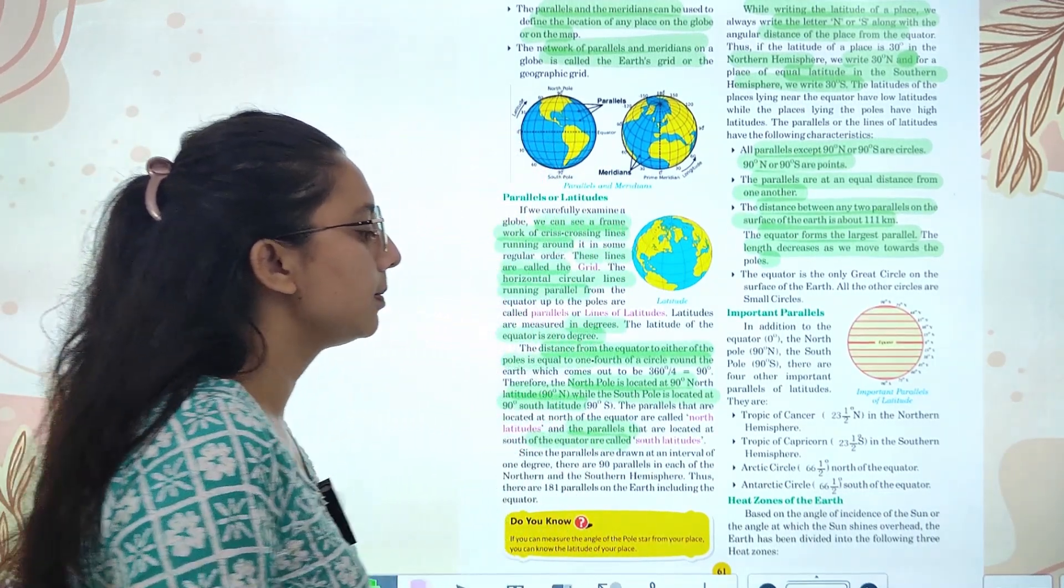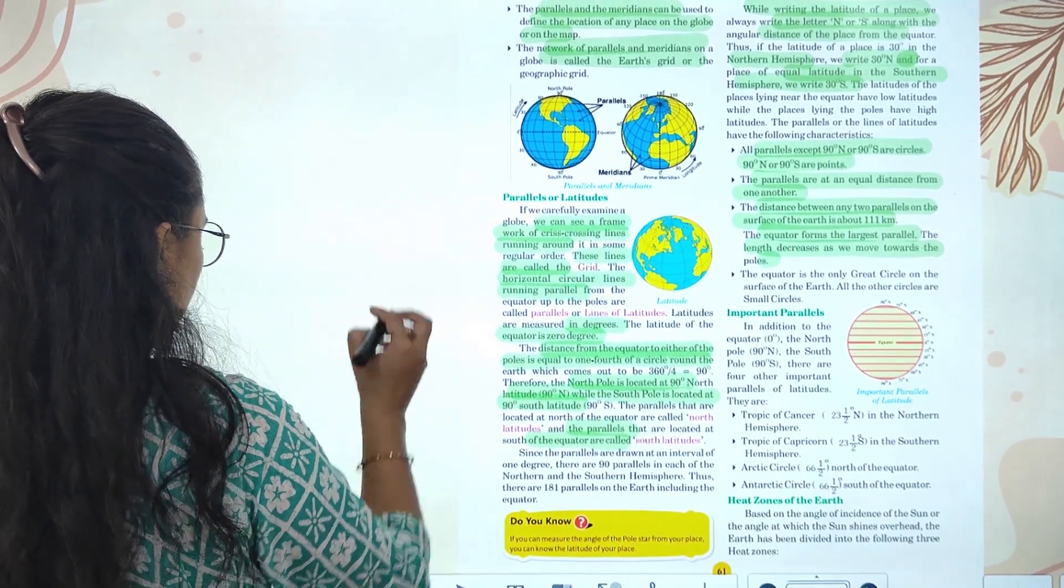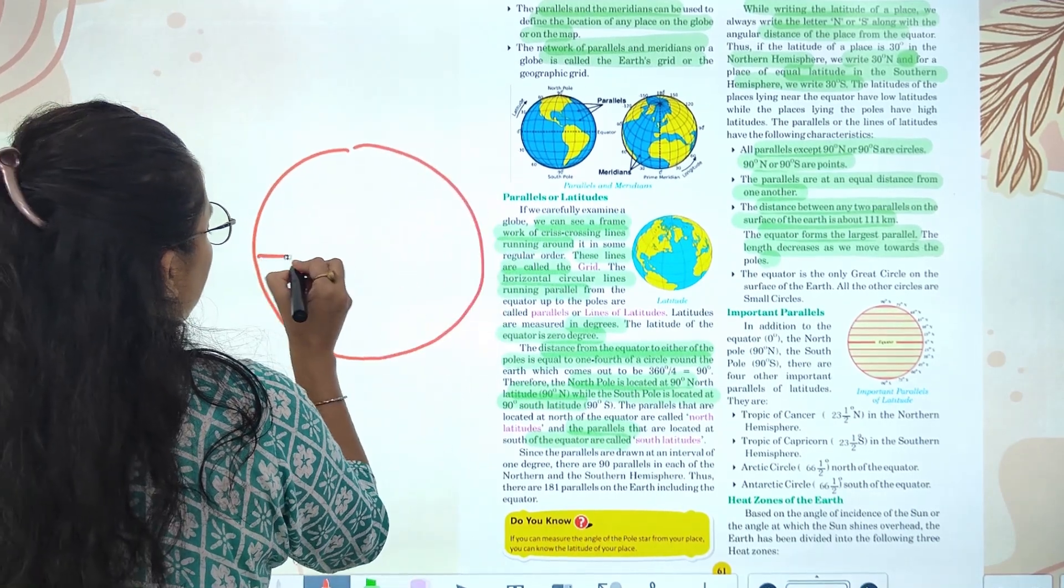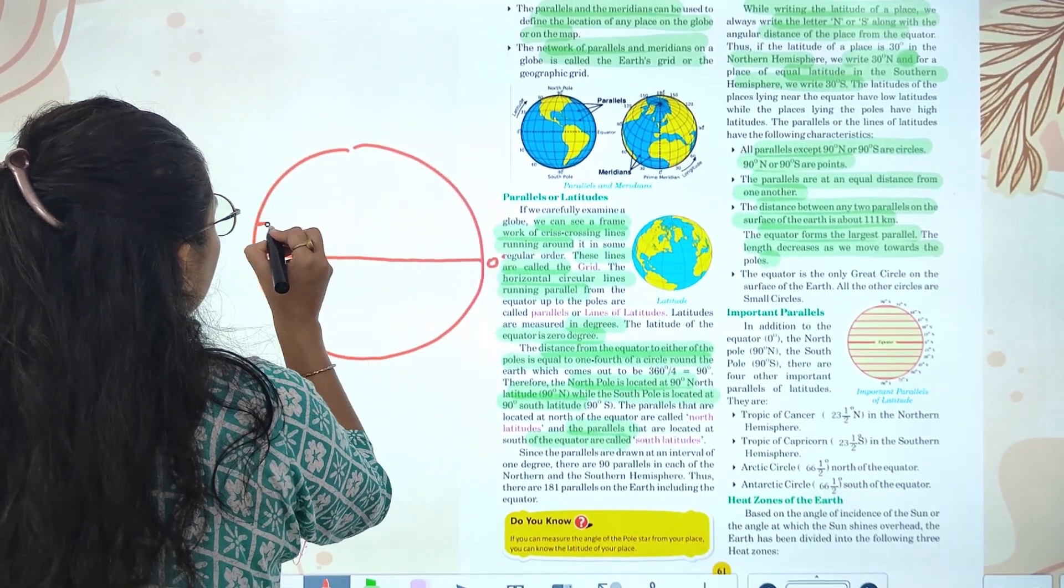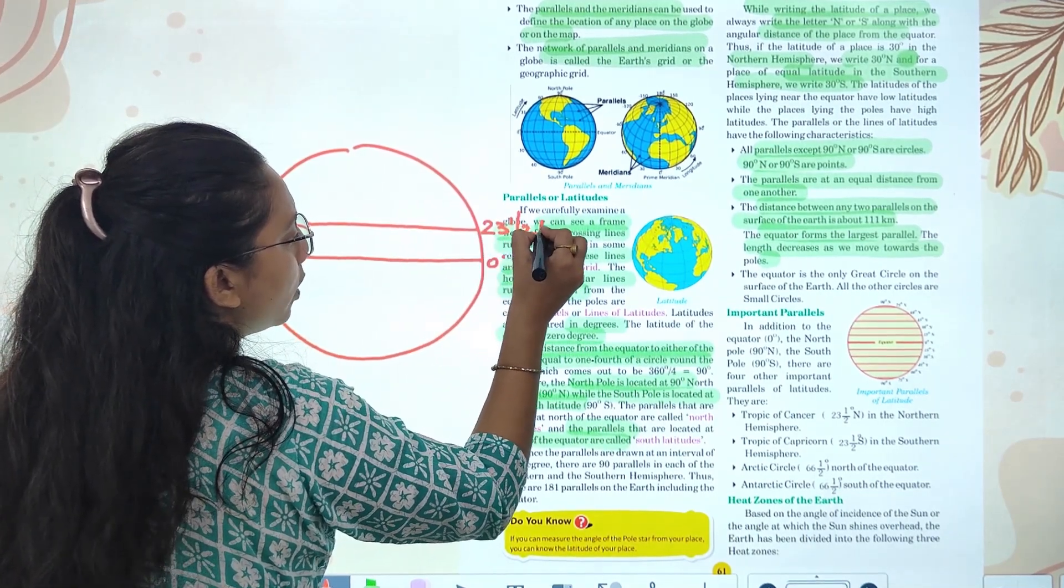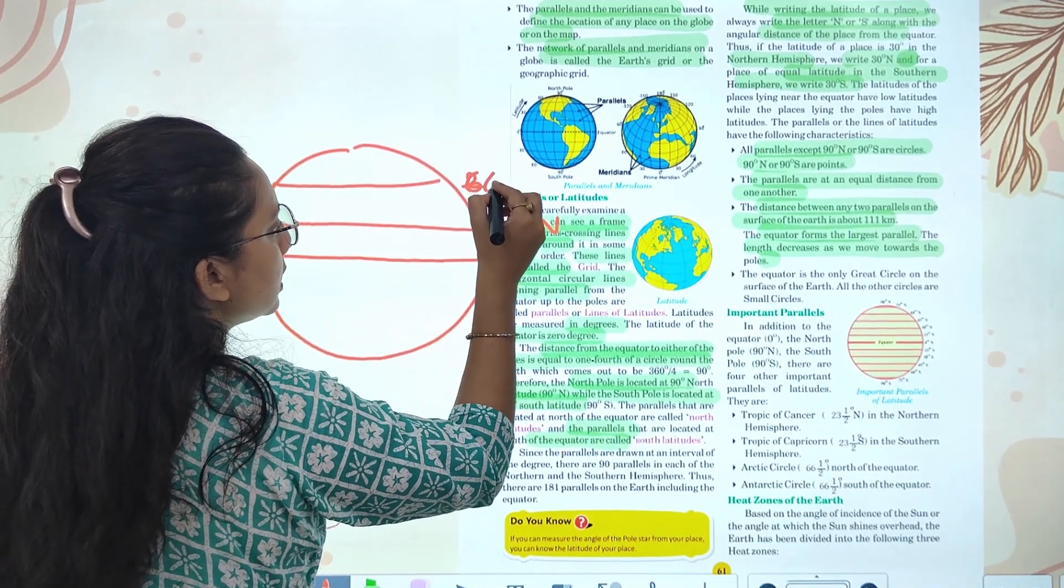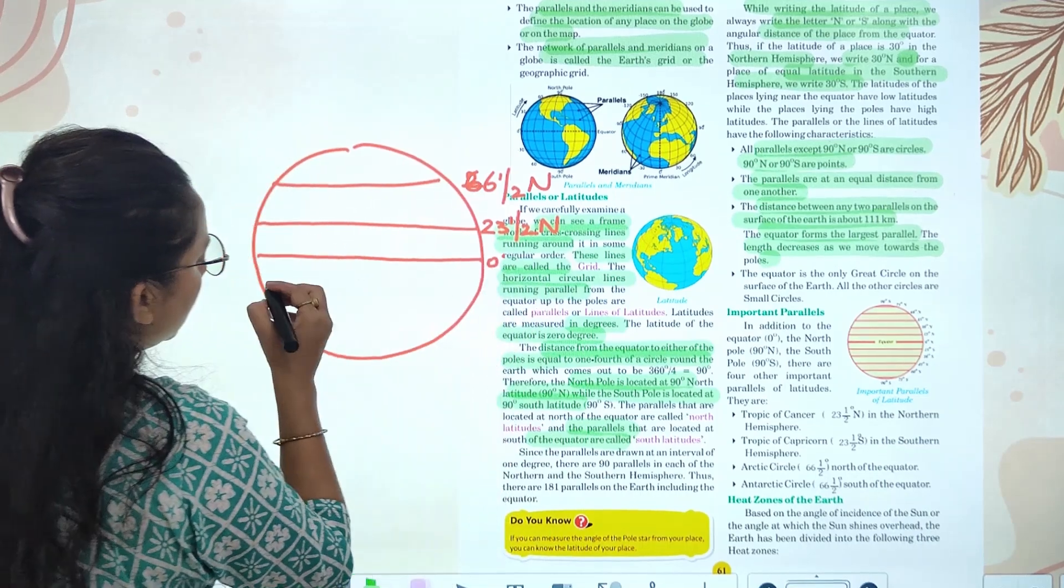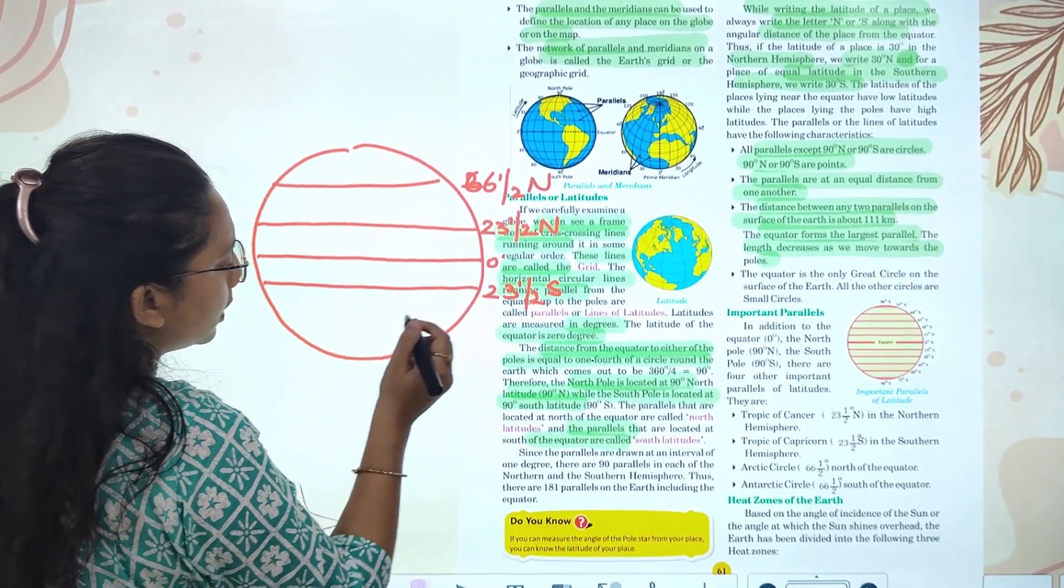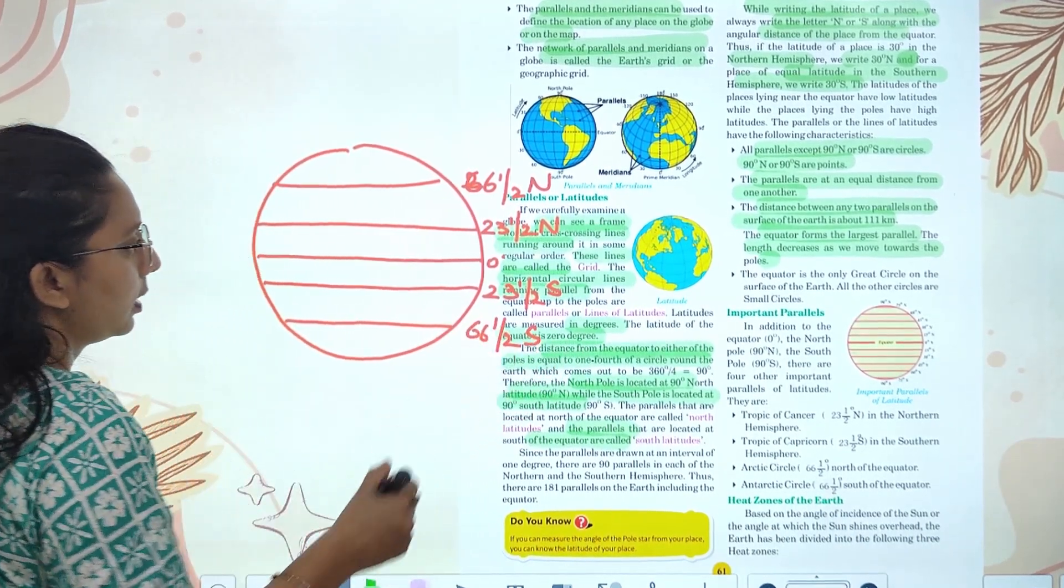Now I will tell you about important parallels. You have the equator at zero degrees. Then 23 and a half degrees north. 66 and a half degrees north. 23 and a half degrees south. And 66 and a half degrees south.